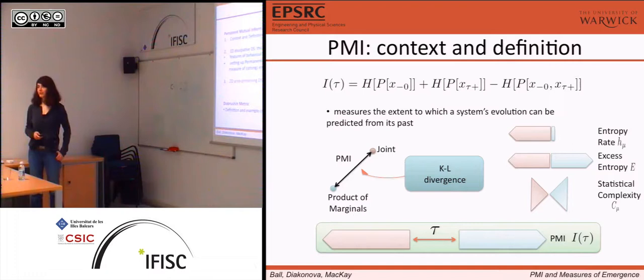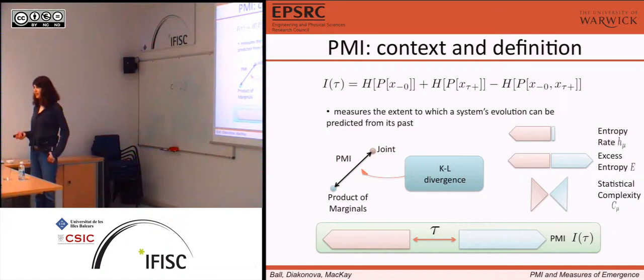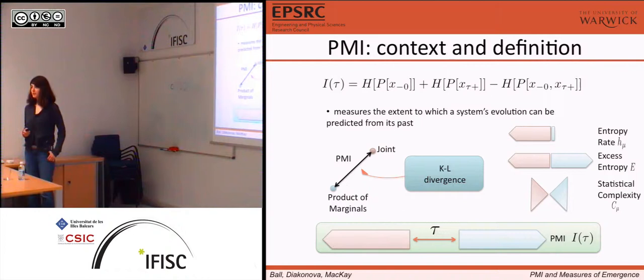We'll also talk about the deglution metric a little bit. Most of you are very familiar with the definition of mutual information. It's the deficit of the sum of the Shannon entropy of the marginals and the Shannon entropy of the joint. If the marginals are absolutely independent, then mutual information is zero. So basically, it quantifies the degree of dependence.